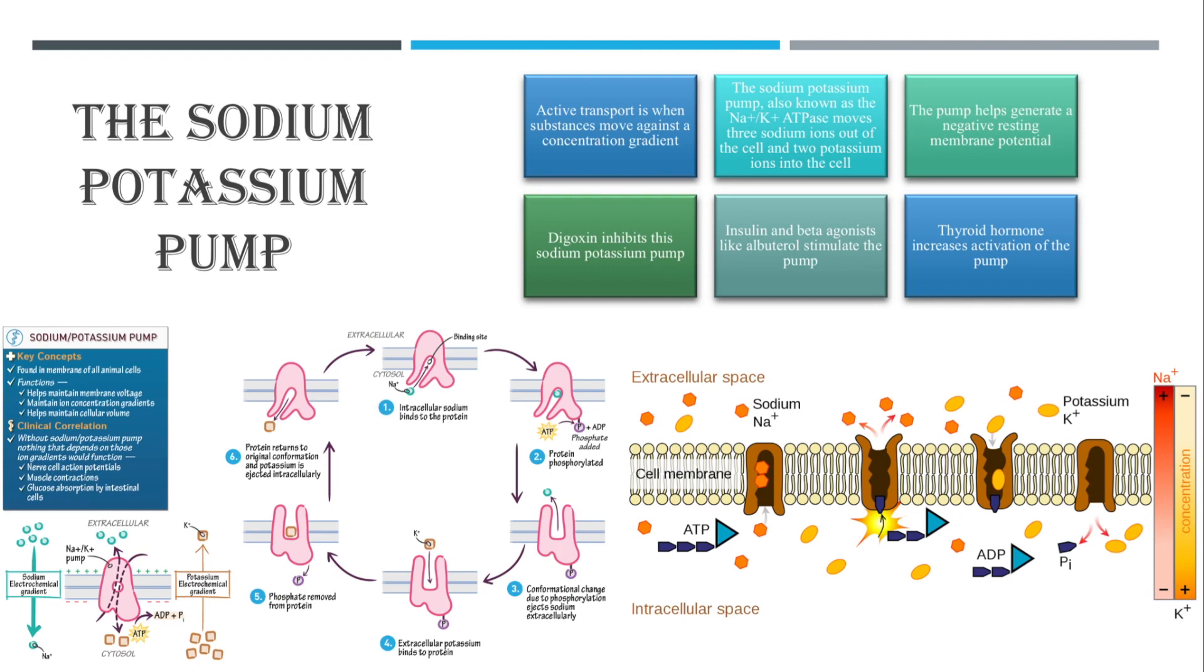So the pump is first open to the inside of the cell and will bind to three sodium ions. The sodium ions here are the orange things right there. It'll bind to three sodium ions and then the pump will break down one ATP molecule, which is why it's called an ATPase since it breaks down ATP molecules. When the ATP breaks down, one phosphate group remains attached to the pump which then causes the pump to change its shape and open towards the extracellular space.